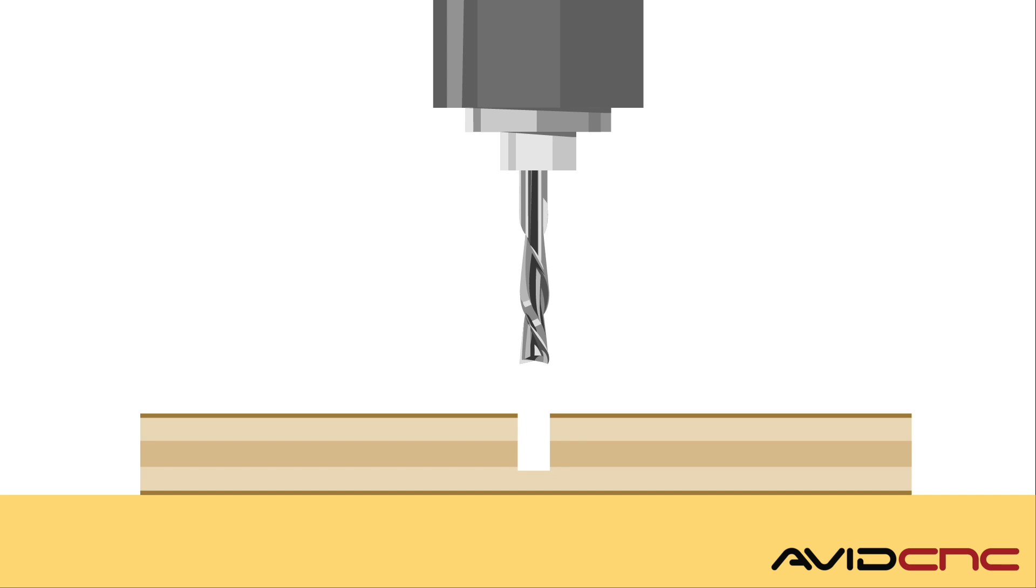Down cut bits are also less desirable during through cuts, as they can leave a ragged bottom edge and potentially result in tear out on the bottom veneer depending on the material.